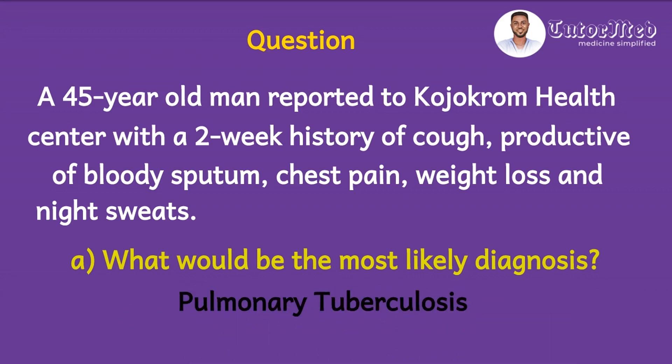This case is pretty straightforward. Once a patient comes with a two-week history of cough — that chronic cough — and the cough is productive of blood-spitting, which medically is known as haemoptysis, and then there is chest pain, weight loss and night sweats, everybody thinks about pulmonary tuberculosis. So we would not spend too much time here, and that is the answer to this question.